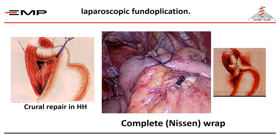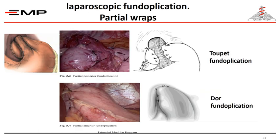There are different types of fundoplication. If the wrap completely encircles the lower esophagus 360 degrees, this is the complete or Nissen wrap. Partial fundoplications include the Toupet — 270 degrees — leaving the anterior surface of the esophagus free, and the anterior fundoplication covering only the anterior surface of the esophagus, called the Dor fundoplication.